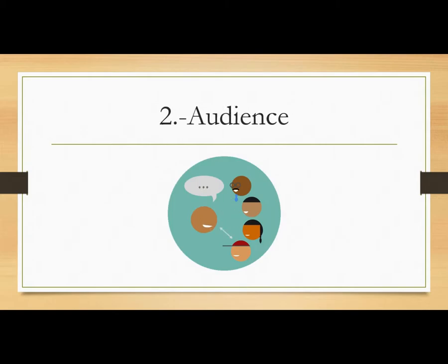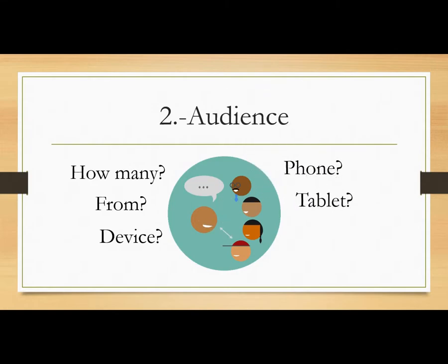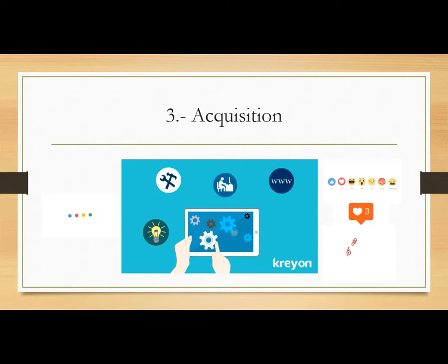Number two will be the Audience. The Audience section will show you how many people are actually visiting your site, where they are from, the devices they're using — if they're using a phone, a tablet, or a computer. It will give you information about where your visitors are from.